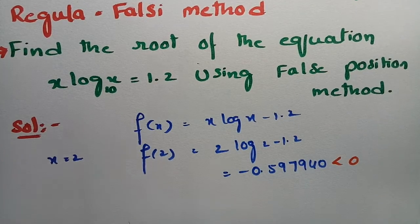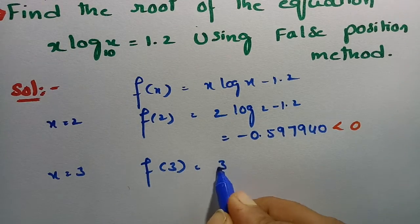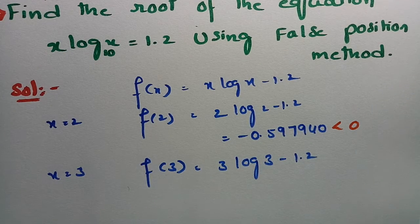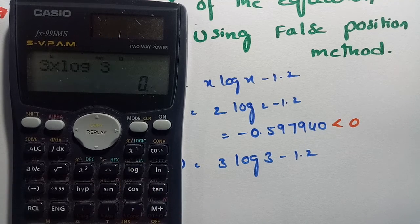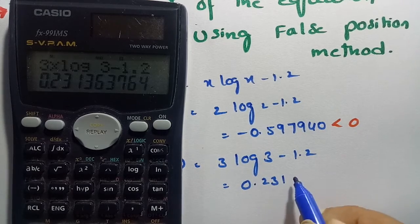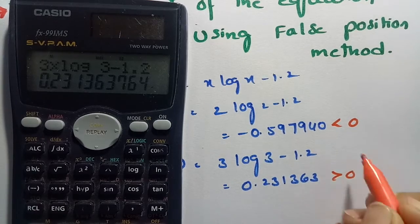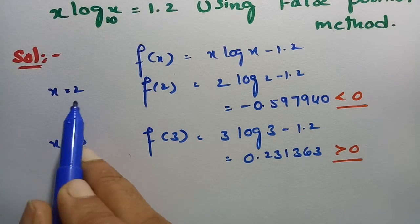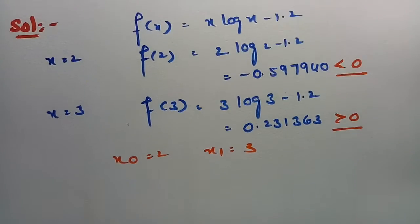Since f(2) is negative, let's try x = 3. f(3) = 3·log(3) − 1.2. This value is 0.231363, which is a positive value. Since we get different signs, we consider x₀ = 2 and x₁ = 3.